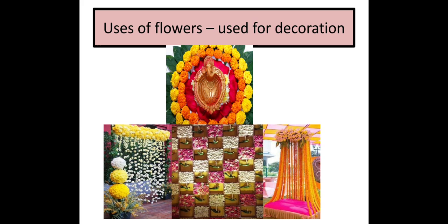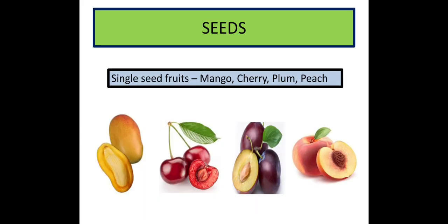And a flower turns into a fruit. What happens inside the fruit? Seeds. Do we find seeds in all the fruits? Which we call vegetables are not actually vegetables - they are fruits. Because there are seeds in all fruits. According to science, can you think of a fruit which does not contain a seed?